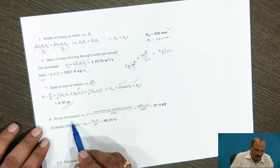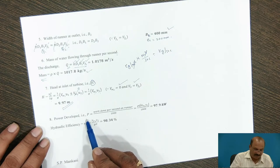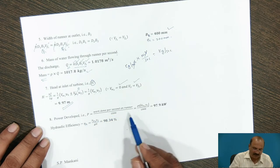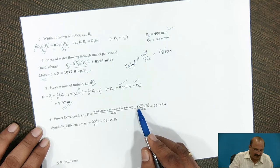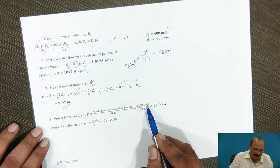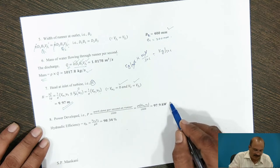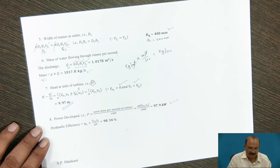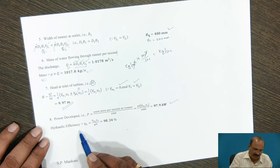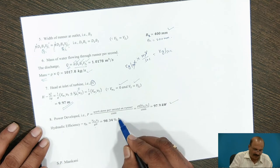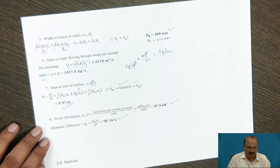The power developed P = (mass × Vw1 × U1) / 1000. Substituting the mass flow rate and previously calculated values gives P = 97.9 kilowatts. The hydraulic efficiency η_H = (Vw1 × U1) / (g × H), which gives η_H = 98.34%.